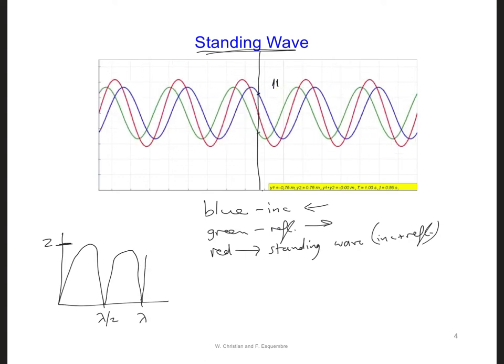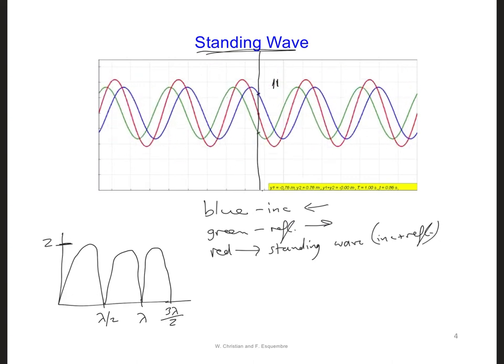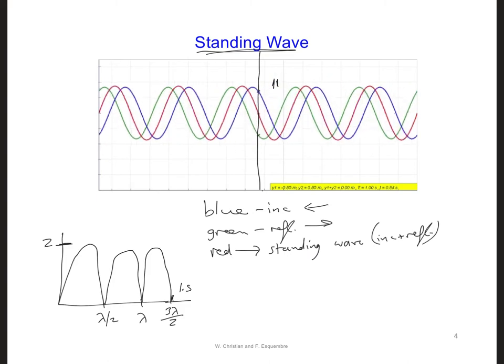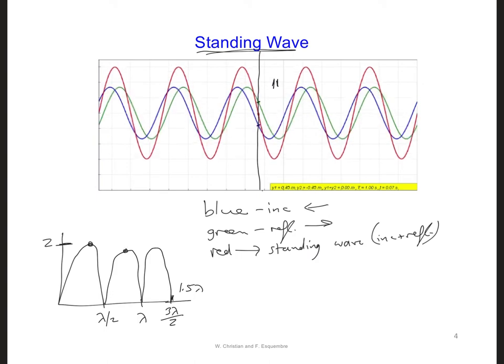So that would be one full wavelength, and 3 lambda over 2. Since our grid only extends out here to 1.5 wavelengths, we'll expect to see a total of 3 peaks.